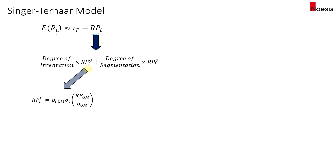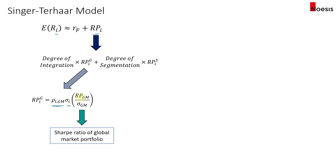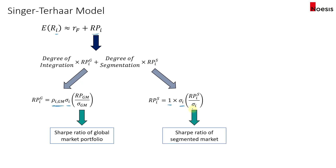If the asset class is perfectly integrated with the GIM, the risk premium is estimated using the correlation between the asset class and the global market portfolio, times the standard deviation of the asset class, multiplied by the Sharpe ratio of the global market portfolio — which is the risk premium of the global market portfolio over its standard deviation. For the risk premium of the completely segmented market, the correlation is set equal to 1 because the market is closed, so the asset class correlates only with itself, multiplied by the standard deviation of the asset class and the Sharpe ratio of the segmented market.